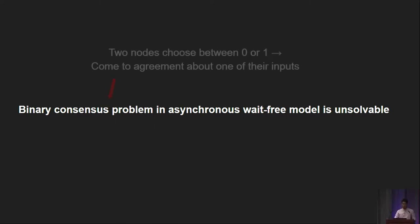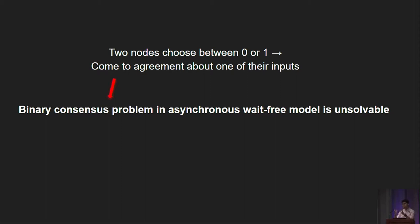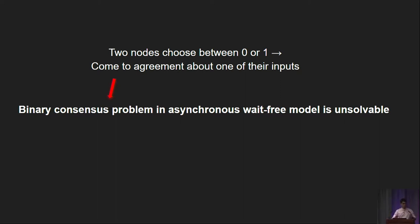If you recall what consensus is from distributed systems, it is a decision task where you have a group of nodes, each with a certain input, and you want them to communicate and agree about one of their inputs. We're considering a binary version from two different perspectives: it's binary because there are only two nodes, and binary because the inputs could either be 0 or 1. If one node is given 0 and the other is given 1, they can terminate with 0 altogether or 1 altogether. But if they're given the same inputs, say both are given 0, they must terminate with 0 altogether.